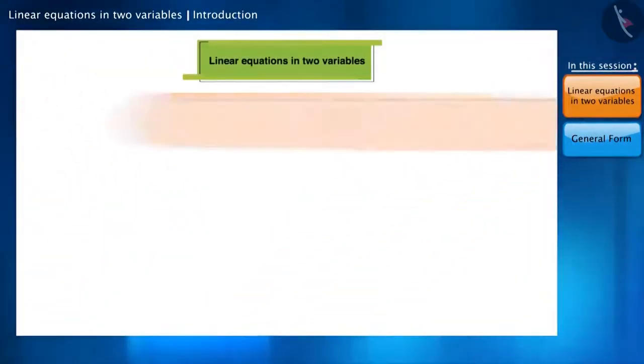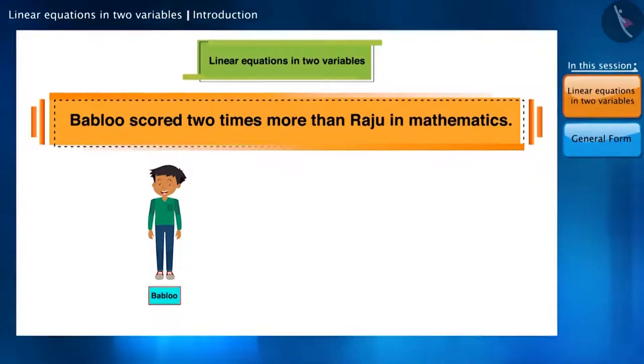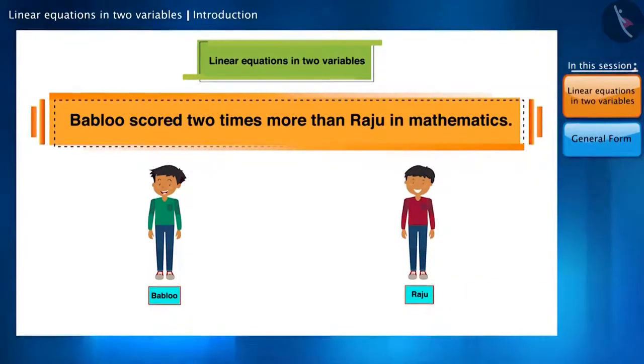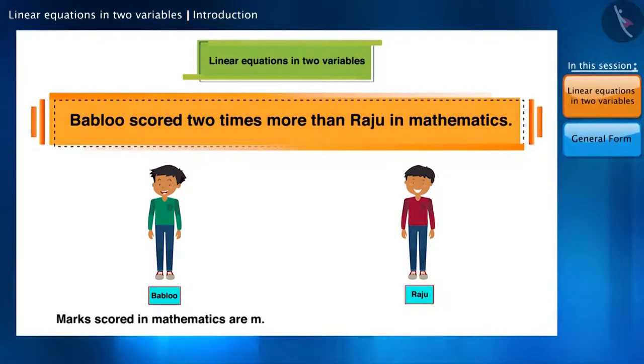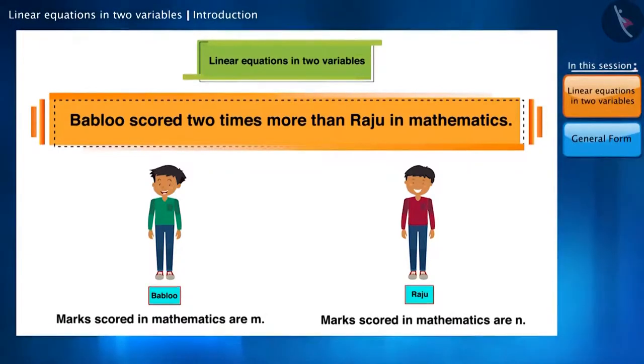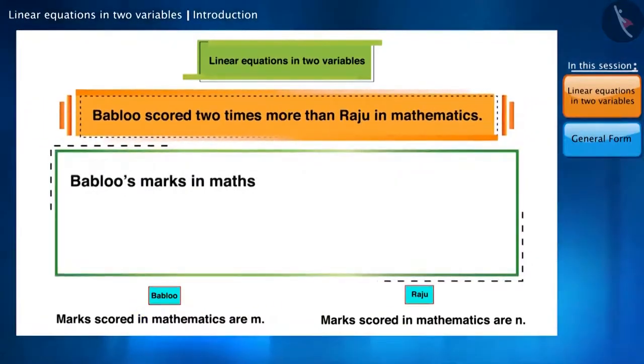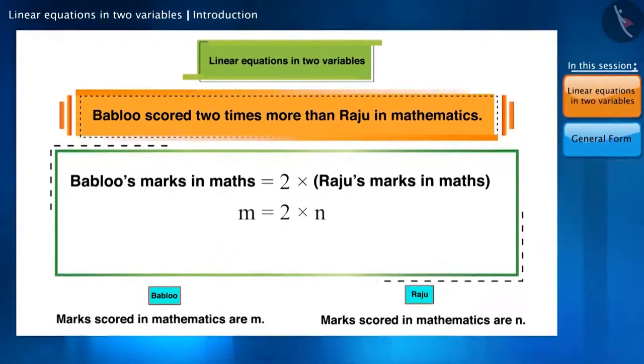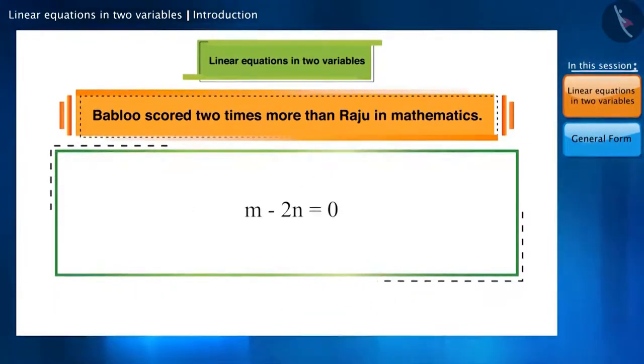Let's look at another example. Bablu scored two times more than Raju in mathematics. Suppose Bablu scored m marks in maths and Raju scored n marks. Note that we can use any other alphabet instead of m and n. Given that Bablu scored two times more than Raju in maths, we can represent it like this. We can write it as m minus 2n is equal to 0 as well. And we get another equation.